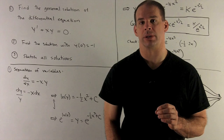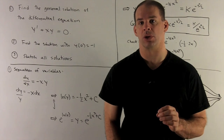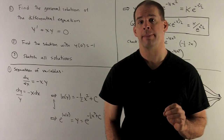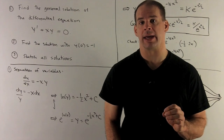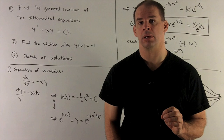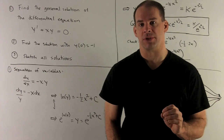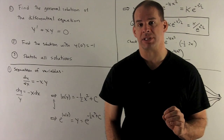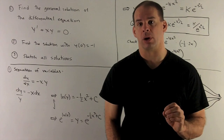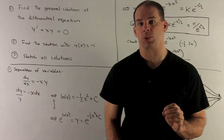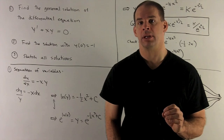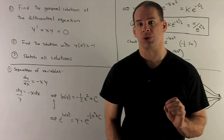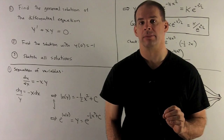Find the general solution of the differential equation y prime plus xy equals zero. Once you have the general solution, find the specific solution where y of zero equals minus one, and then sketch all solutions in the xy plane.